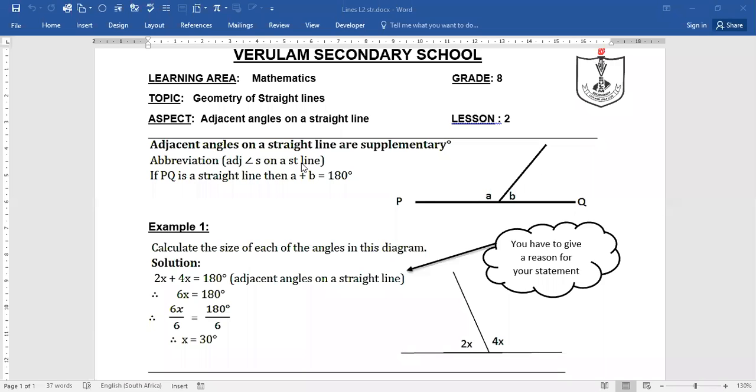Welcome learners to our lesson two, geometry of straight lines. The aspect is adjacent angles on a straight line. If you're looking at this, there's your straight line here. These are your angles on the straight line. So angle A plus angle B is equal to 180 degrees.